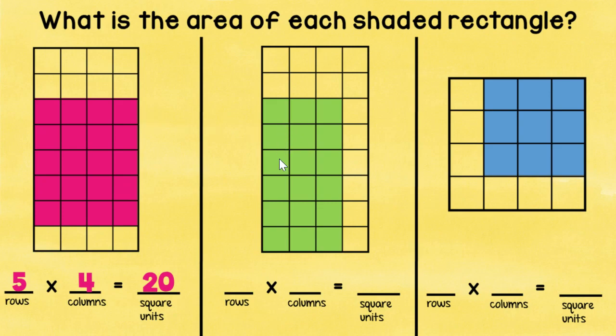Let's take a look at the green rectangle. Going down, we have one, two, three, four, five, six rows. And going across, we have one, two, three columns. So six times three is, say it out loud, yes, 18. Six times three equals 18 square units.